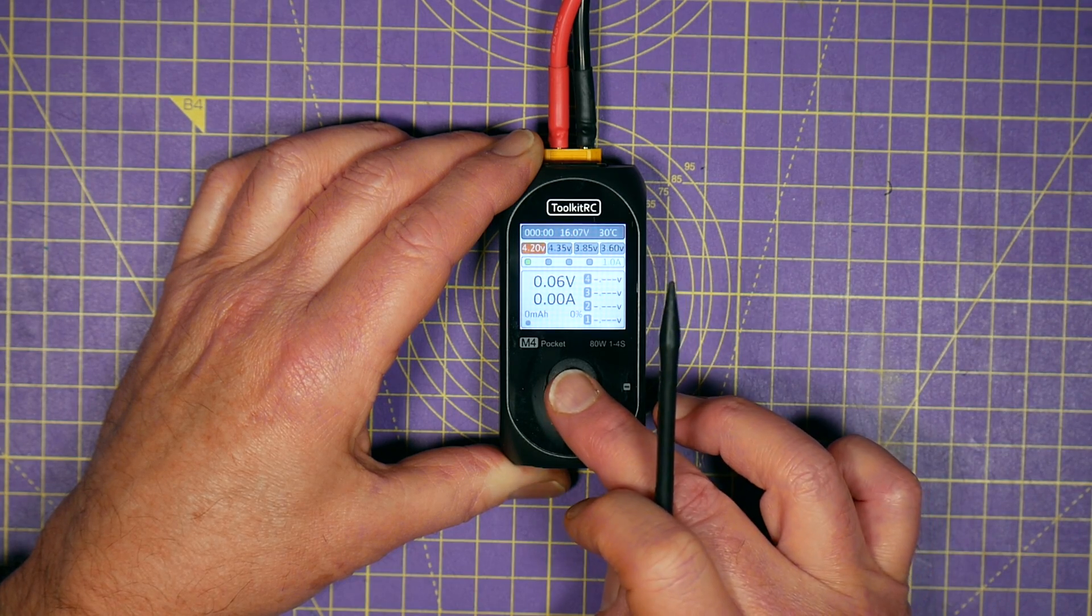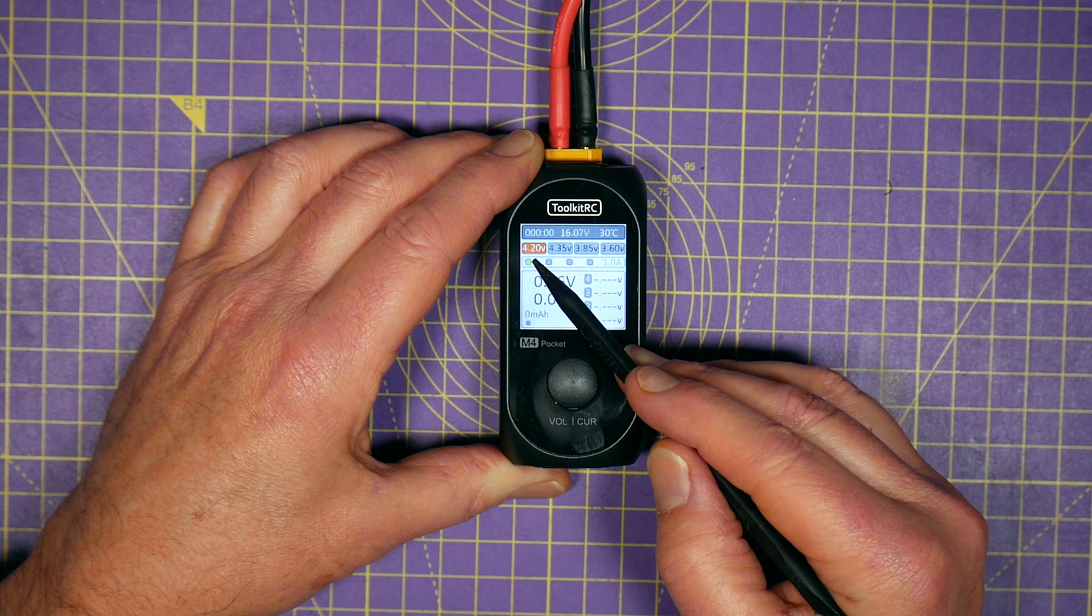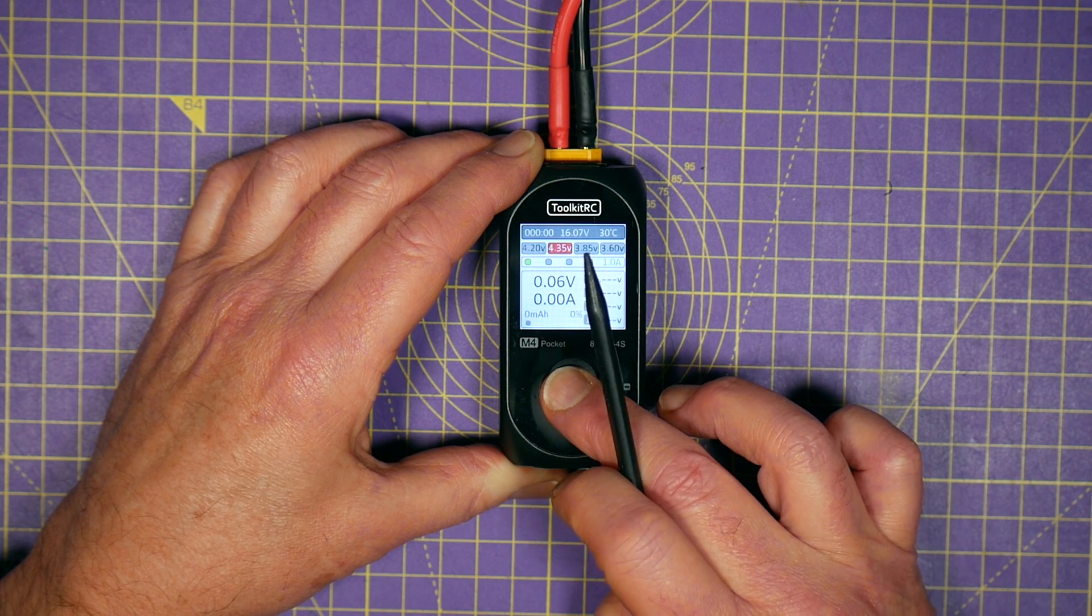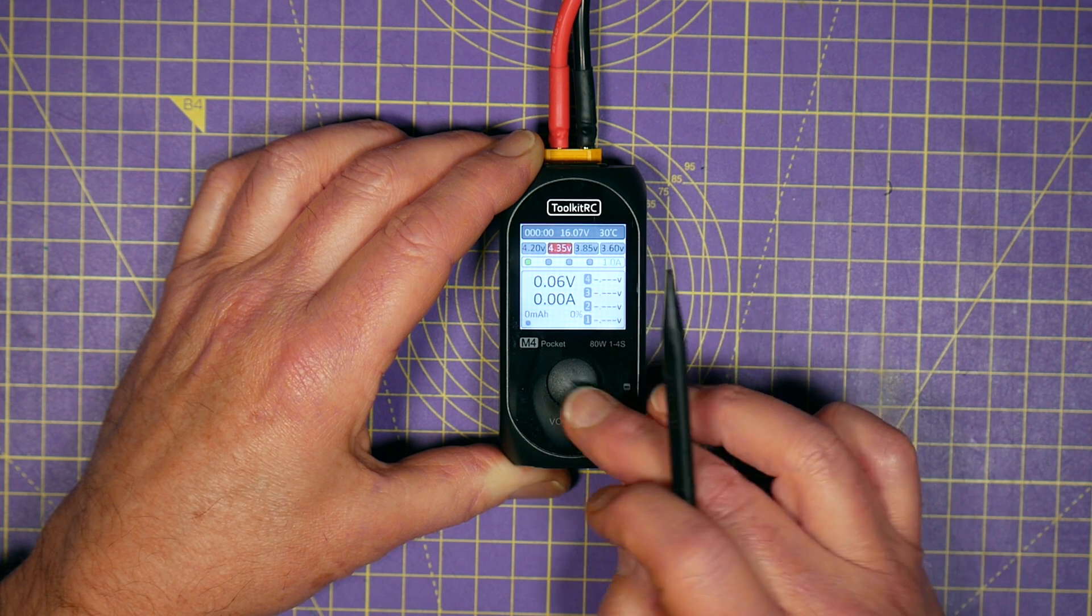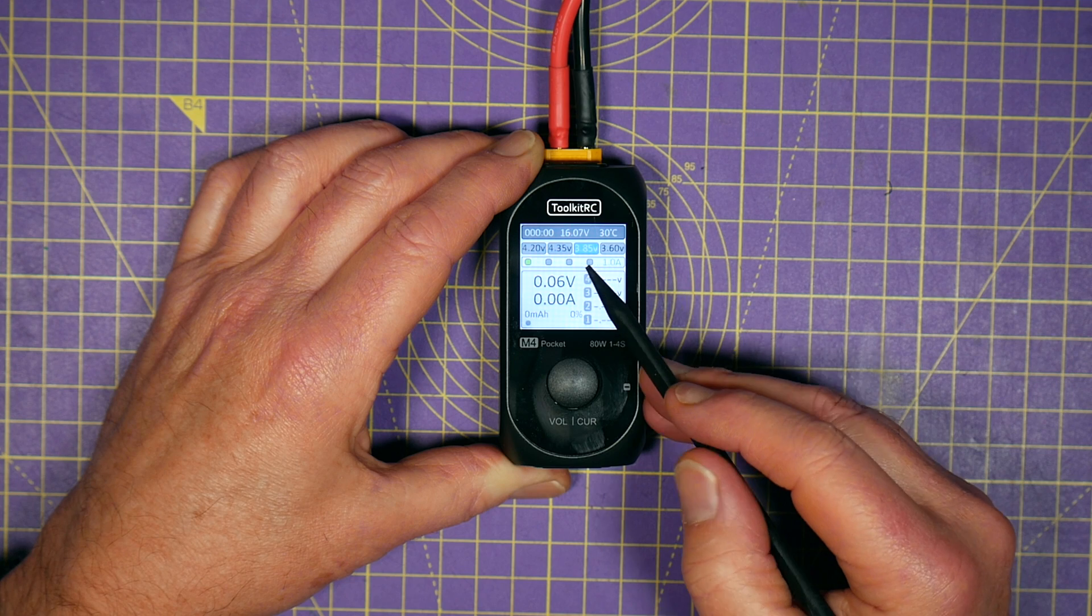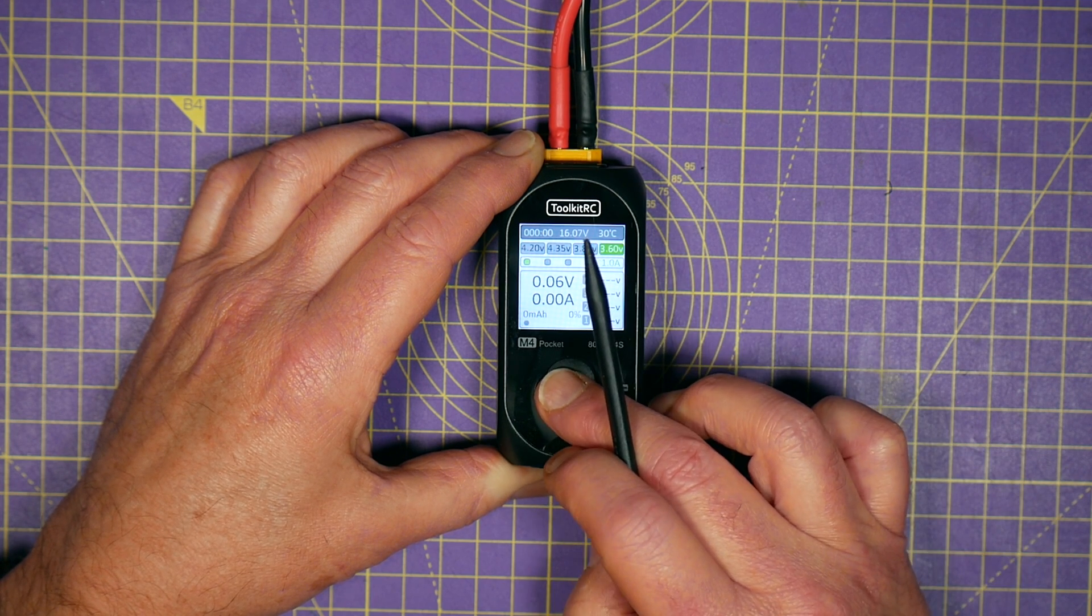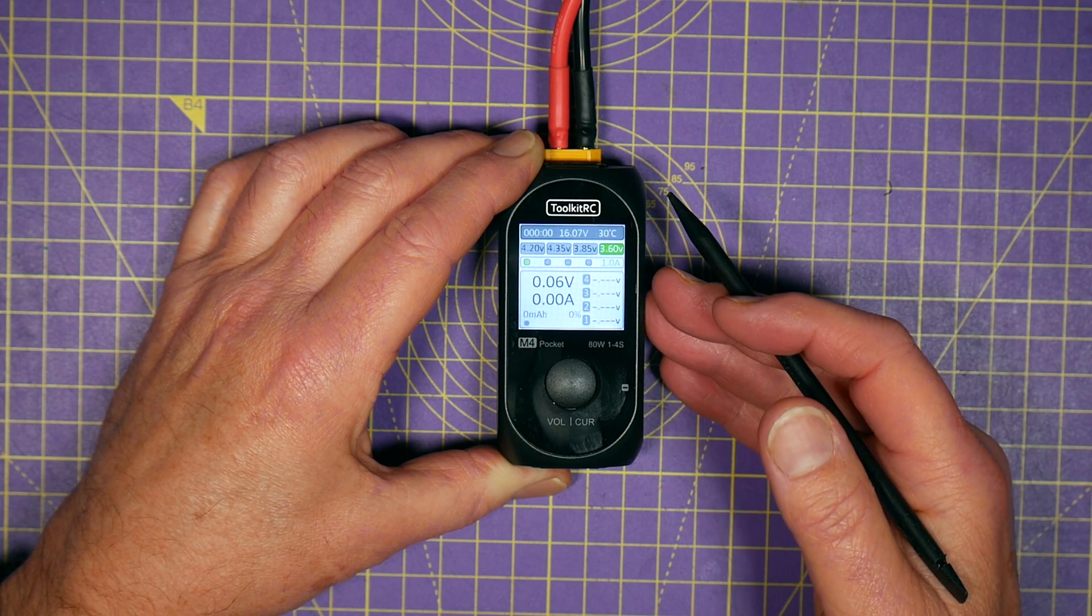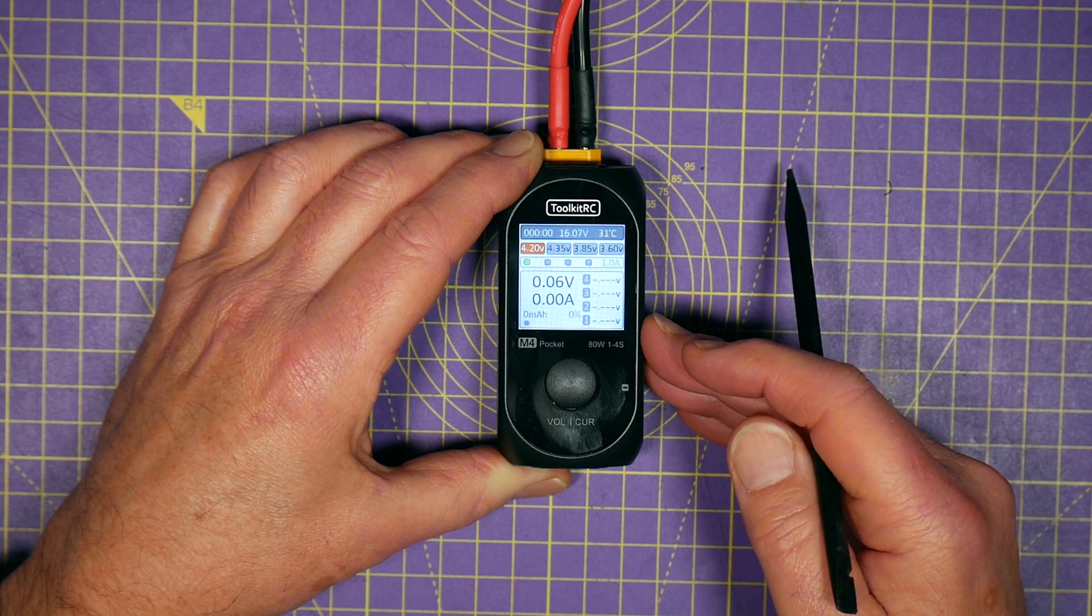And if you long press it changes the battery cutoff voltages. So we are on 4.2 volts here which is for LiPo's. Long press 4.35 that's for high voltage LiPo's. 3.85 that's for storage charge. And then we long press again we get to 3.6 and that's for lithium or iron lithium batteries. Long press again it takes us back to 4.2.